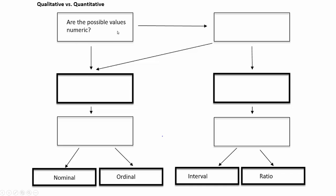If the answer to 'are the possible values numeric?' is no, that leads us straight down to the bold answer box: the data is qualitative. However, there is another arrow also coming to the qualitative box, so we want to look at the other ways to get to an answer of qualitative.